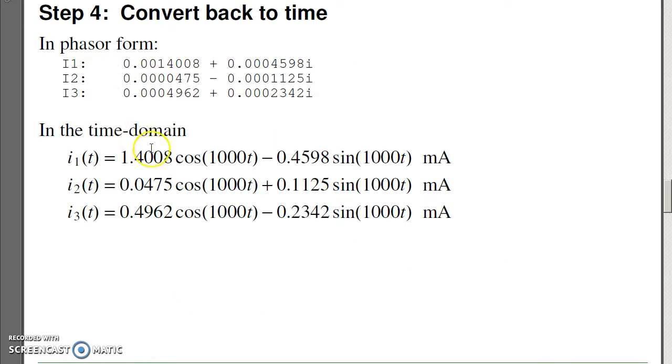So the output is the amplitude. Here this is in milliamps: 1.4 milliamps cosine, 0.4 milliamps sine, minus 0.4 milliamps sine. For I2: 0.04 milliamps cosine plus 0.1 milliamps sine. For I3: plus 0.49 milliamps cosine minus 0.2 sine.